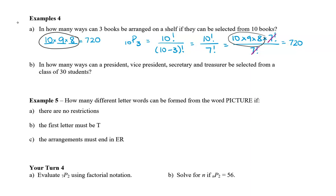How many ways can a president, vice president, secretary, and treasurer be selected from a class of 30 students? Order is important because each position is different. So we have 30 students and we choose 4, giving 30P4, which equals 657,720.